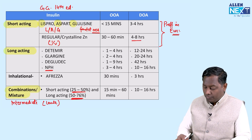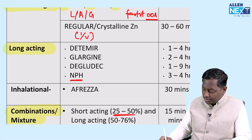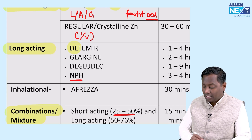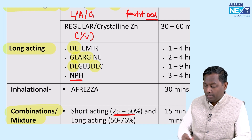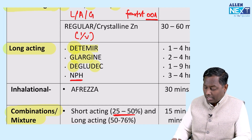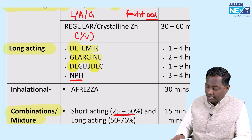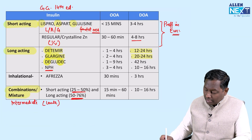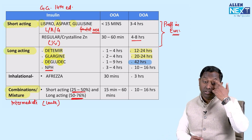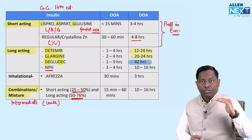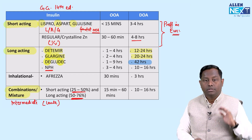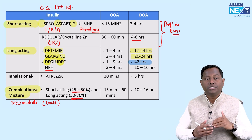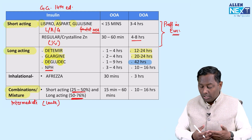For longer acting insulins, the names carry information: Detemir (delayed time), Glargine (larger/longer time), Degludec (delayed and very delayed — meaning very long acting). Degludec lasts up to 42 hours. You don't need to memorize every onset time; just remember which is short acting and which is longer acting, and which is preferred in emergency — that is Lispro, Aspart, and Glulicine with onset less than 15 minutes.